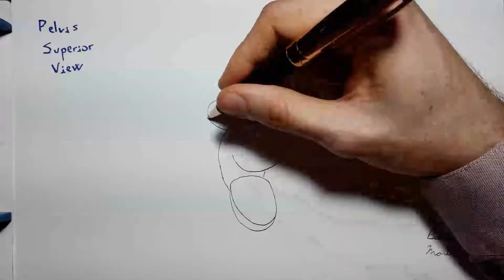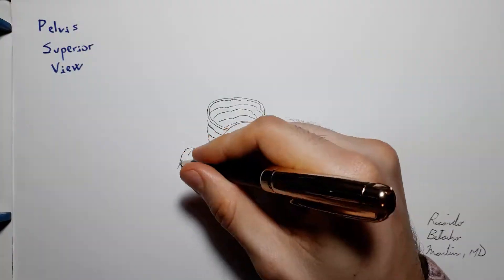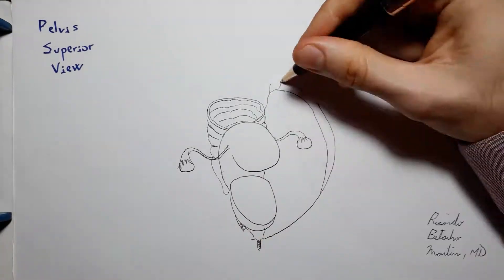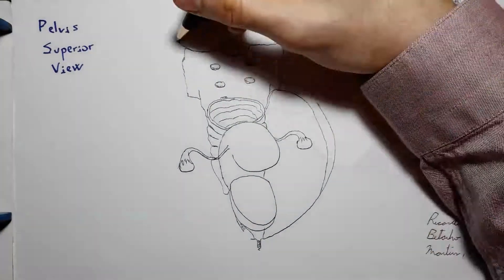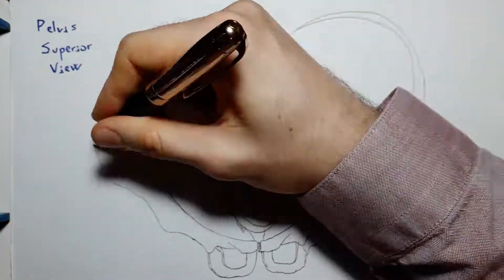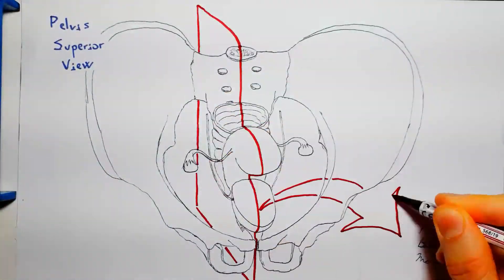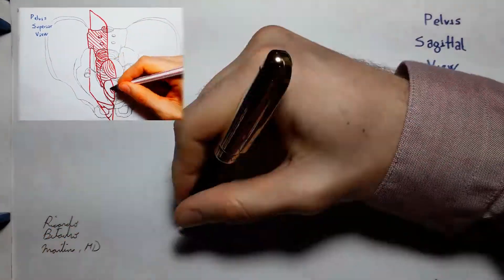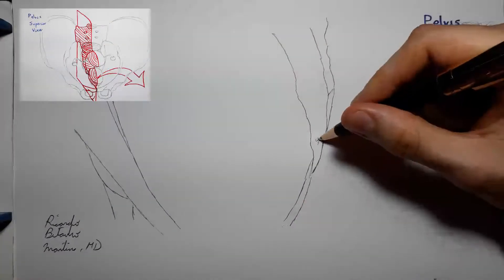The pouch of Douglas, named after Scottish anatomist Dr. James Douglas from the 17th century, is a space, a region, a site, a location of the female pelvis, specifically an extension of the peritoneal cavity into the pelvis.